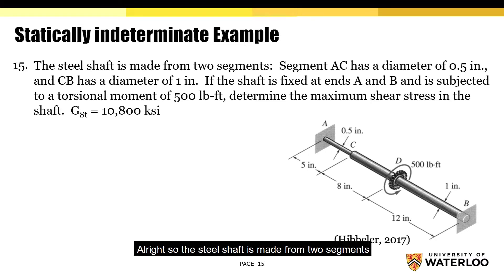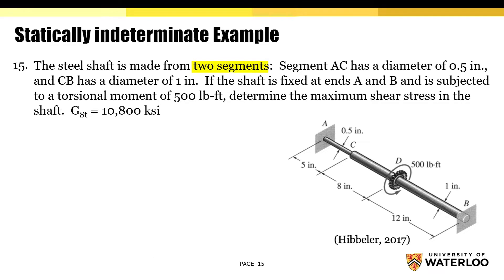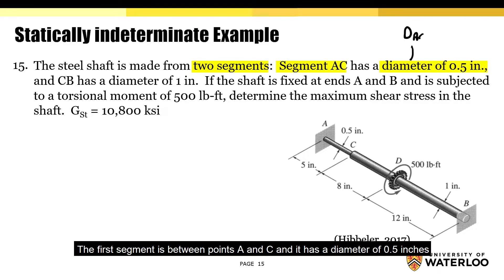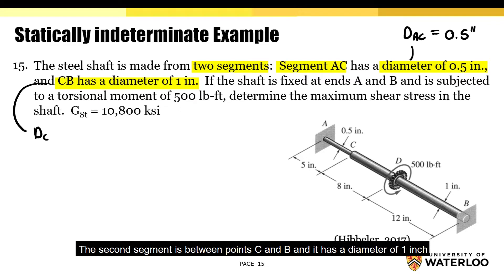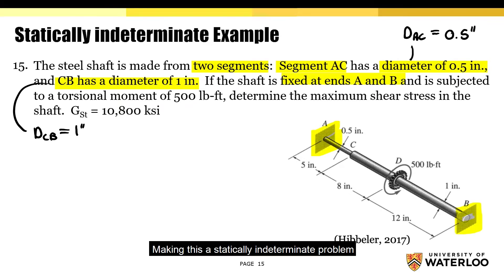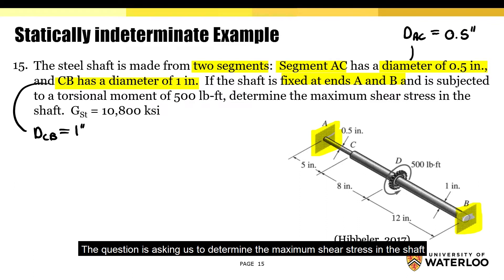The steel shaft is made from two segments. The first segment is between points A and C, and it has a diameter of 0.5 inches. The second segment is between points C and B, and it has a diameter of 1 inch. The shaft has two fixed ends at A and B, making this a statically indeterminate problem. The question is asking us to determine the maximum shear stress in the shaft.